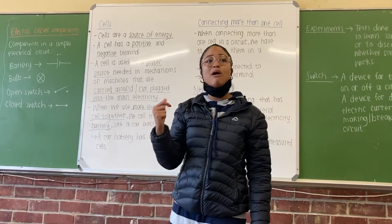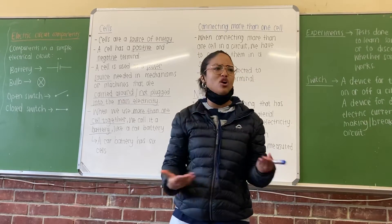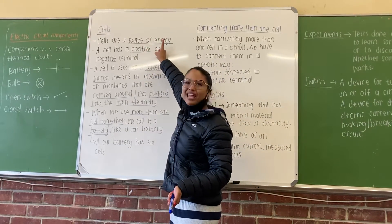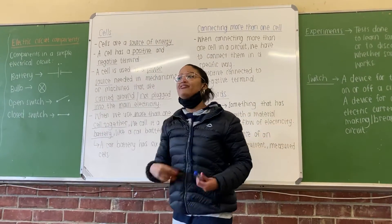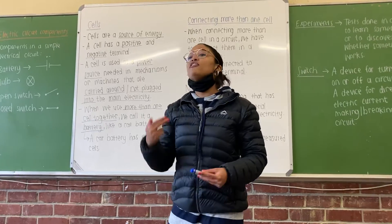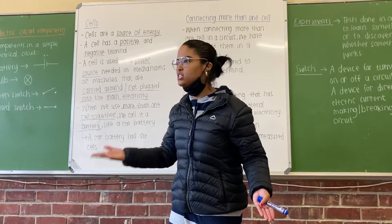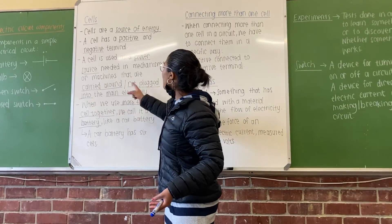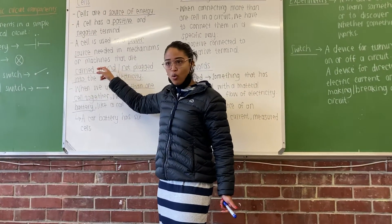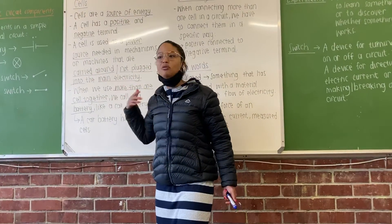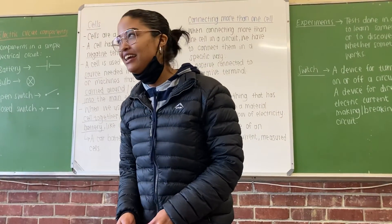So, cells. If I ask you what is a cell, or what do we use a cell for, what is the purpose of a cell — you say it's a source of energy. To elaborate, you can say it has a positive and a negative terminal. When do we use a cell? It's a power source for machines that can be carried around or things not plugged into the main electricity. More than one cell is called a battery.